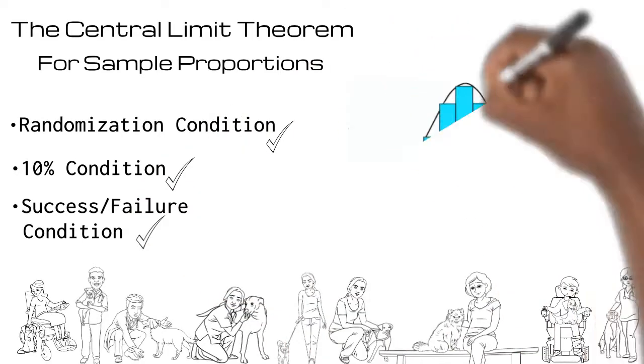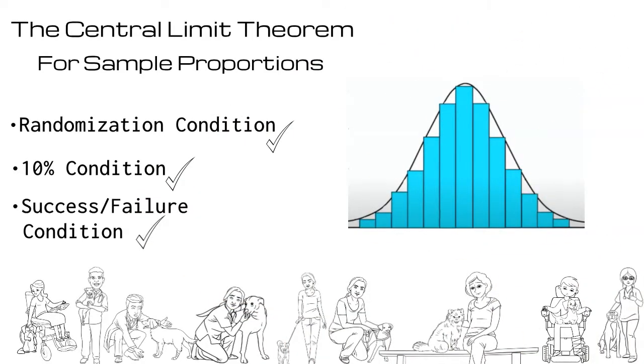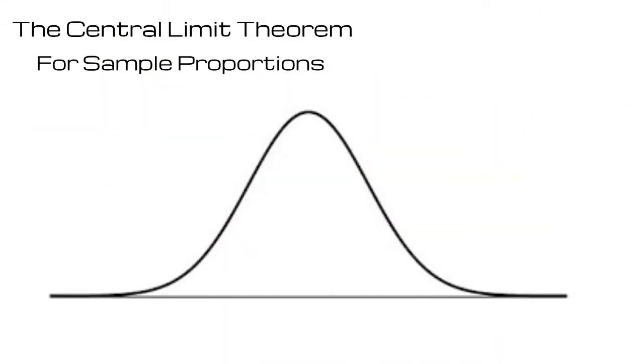If all three conditions are met, when we create a histogram with our proportions, they will be normally distributed, and our actual population proportion will be at the center. Before we jump into an example, let's make sure we remember what the normal model looks like.